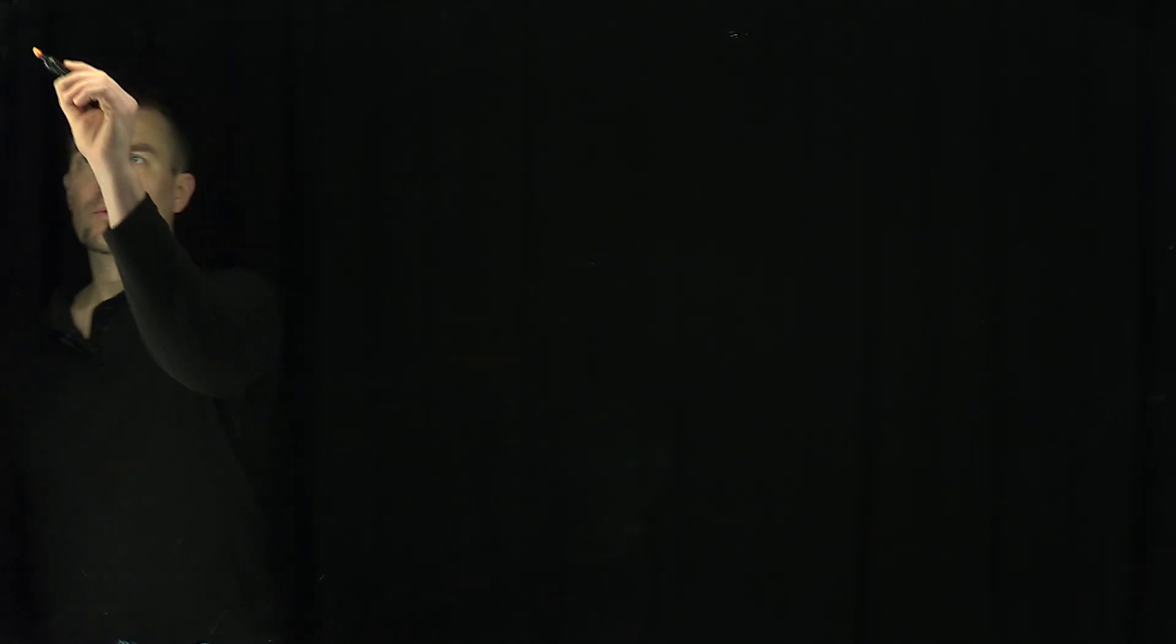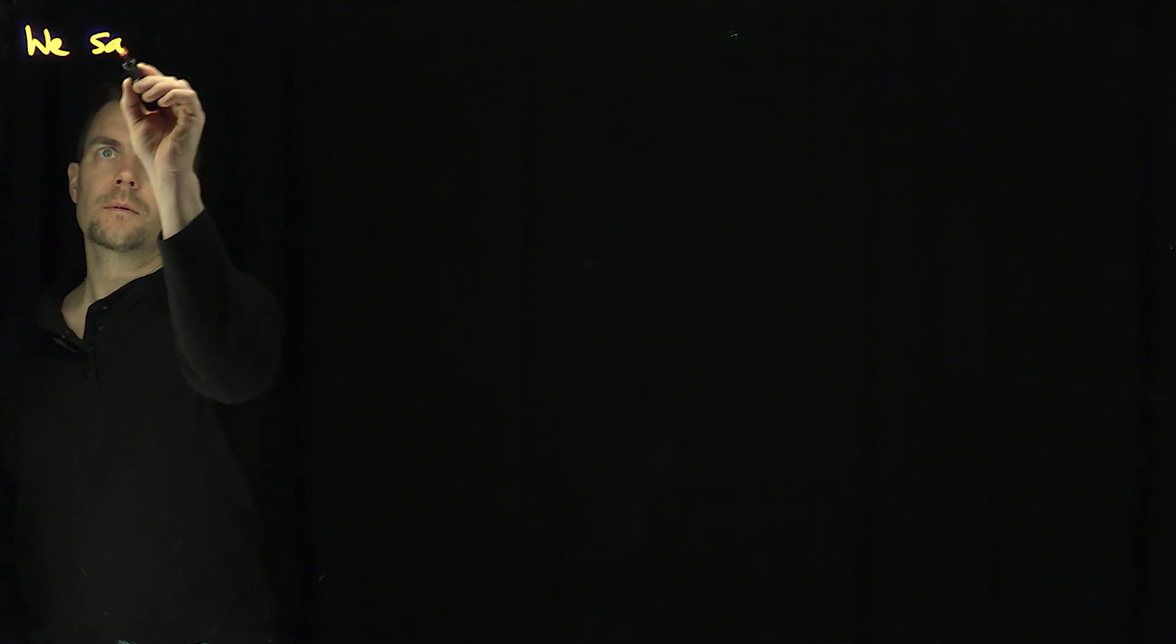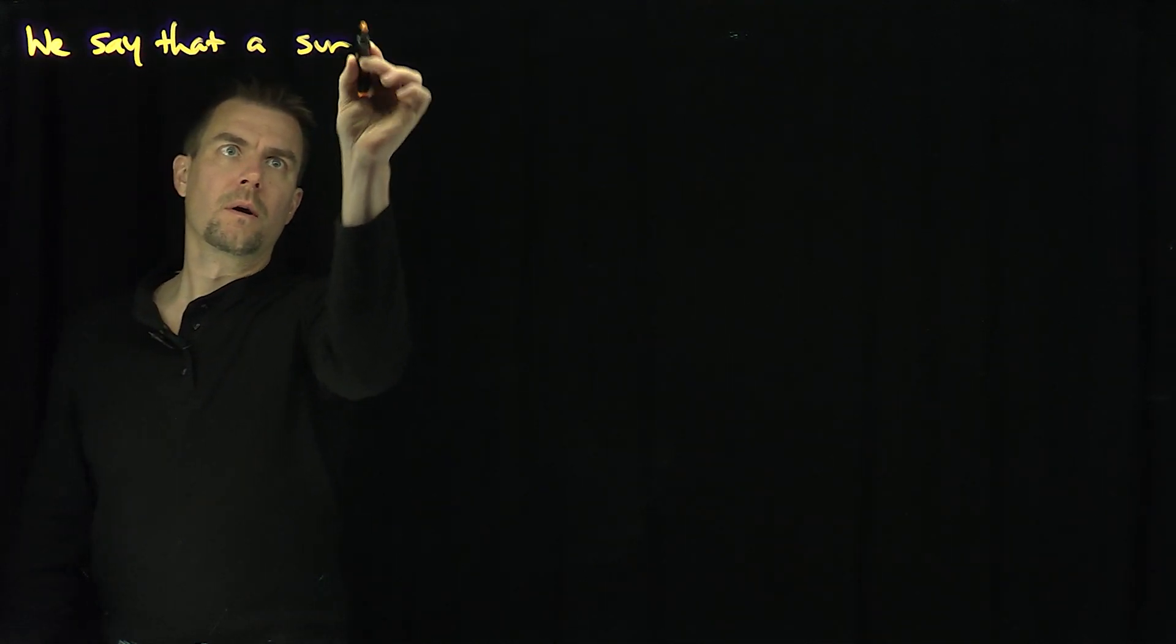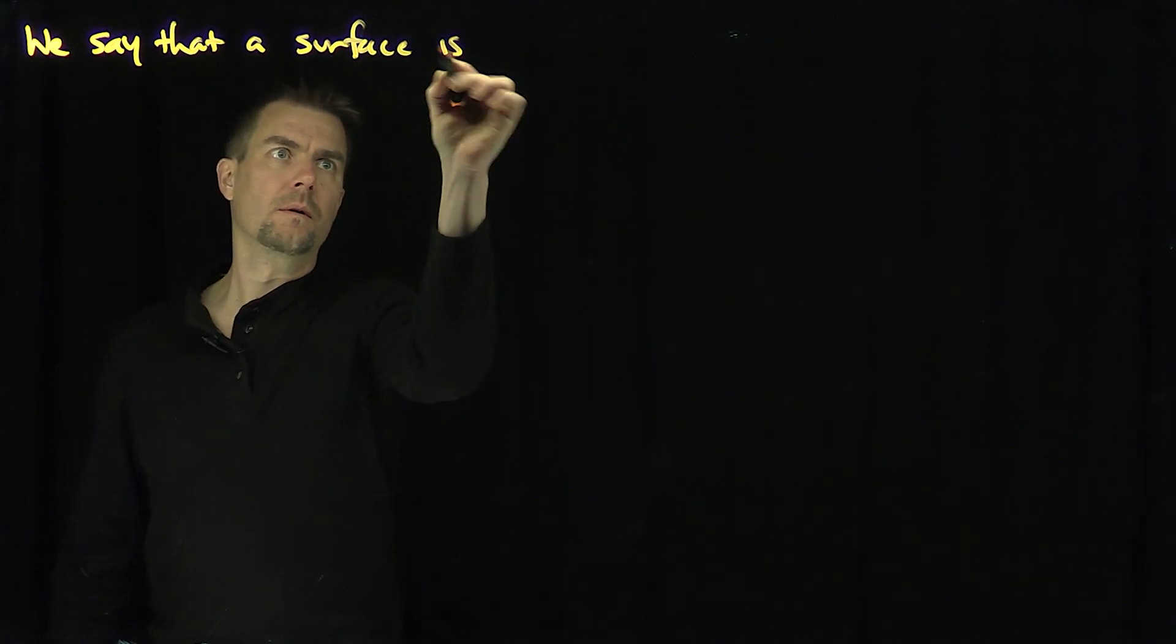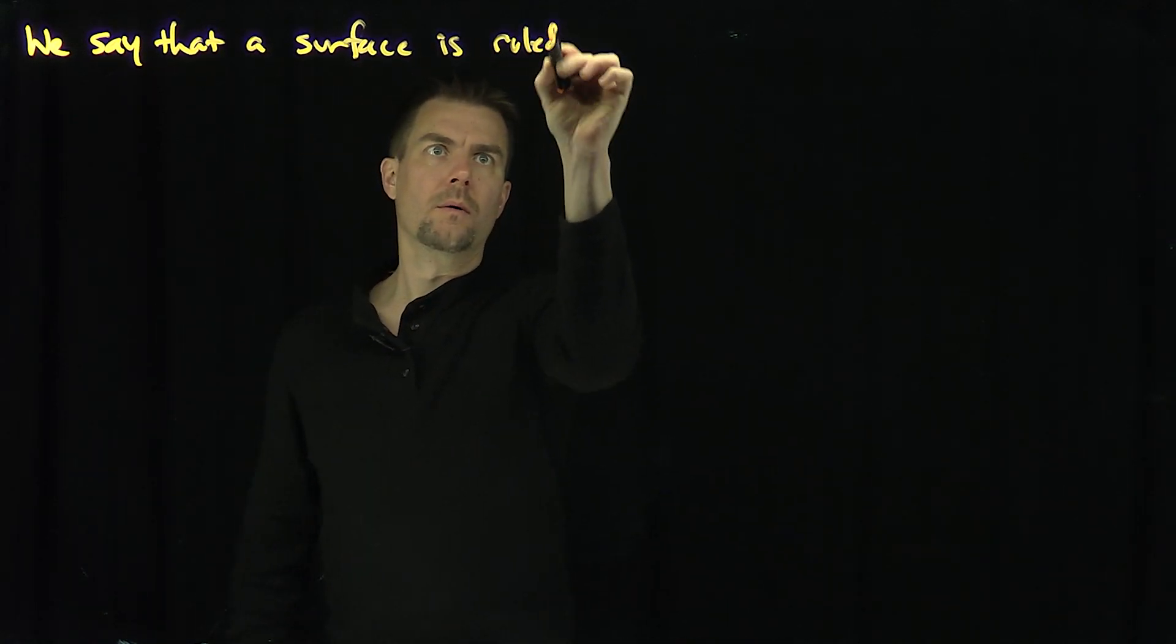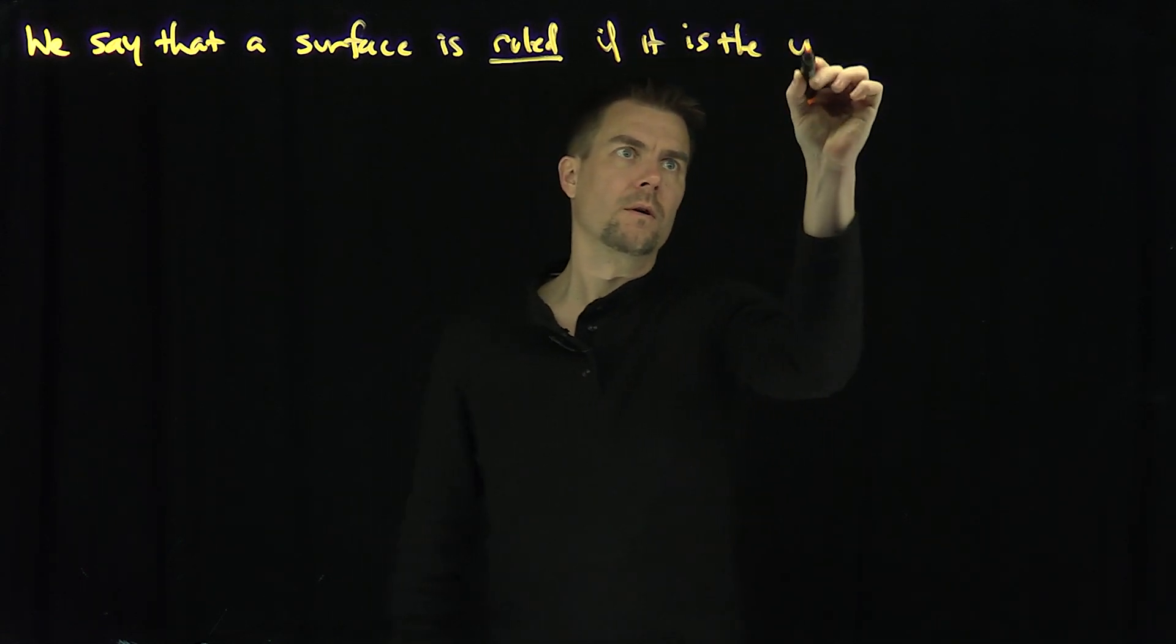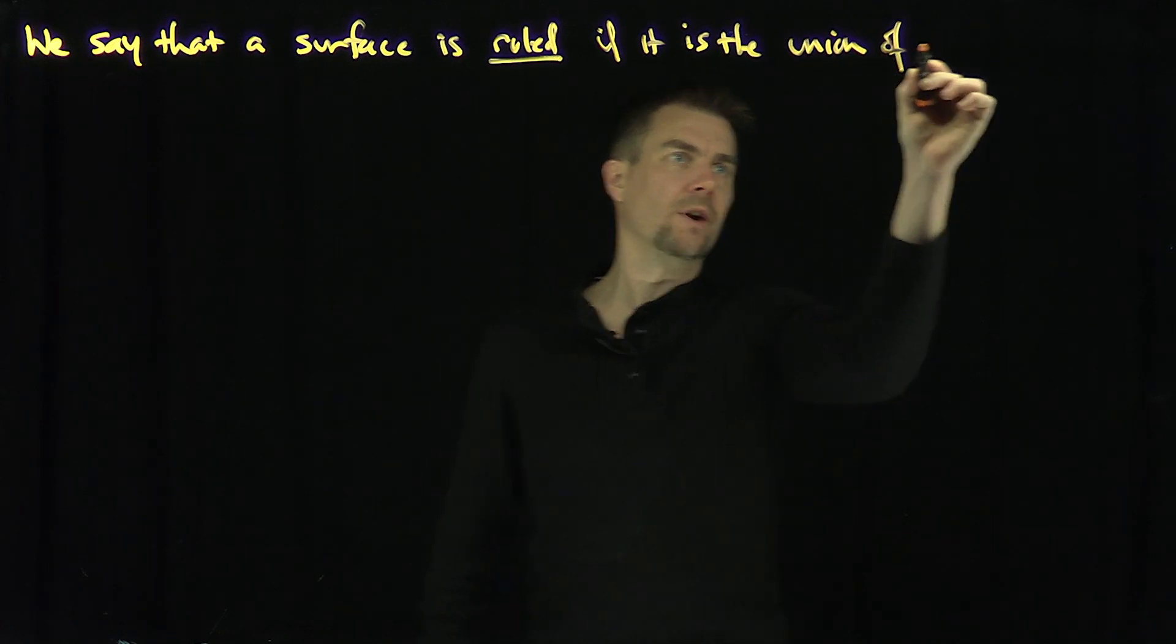Hello students, in this video we'll consider ruled surfaces. We say that a surface is ruled if it is the union of straight lines.